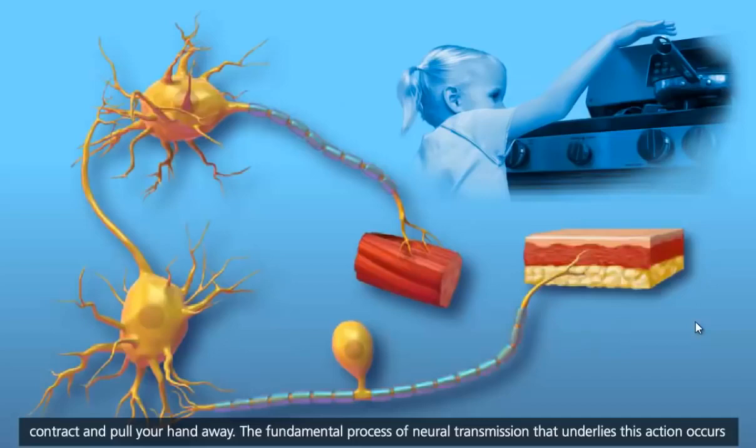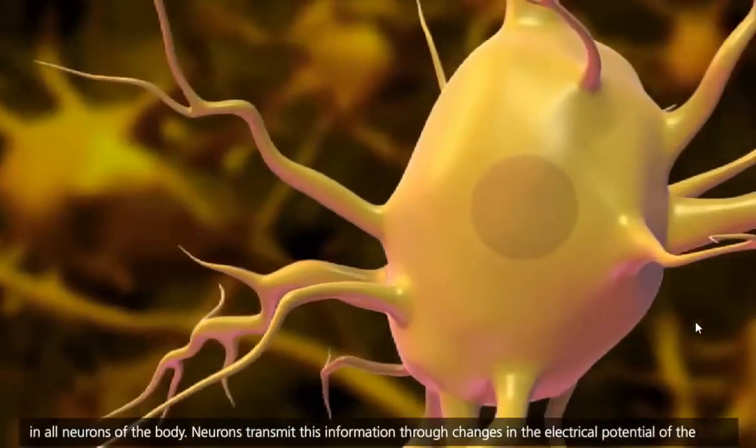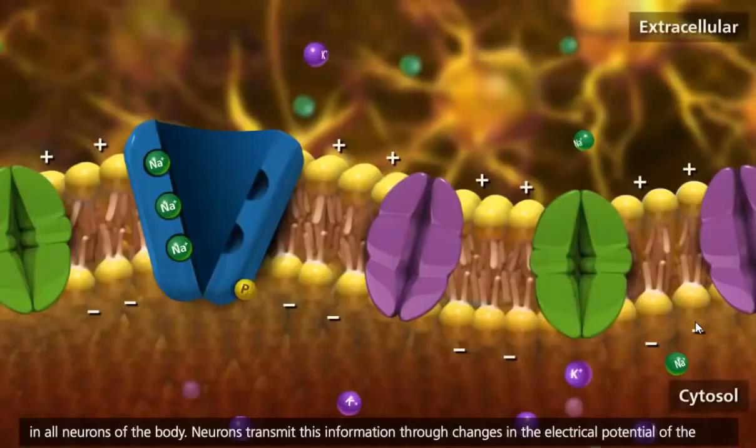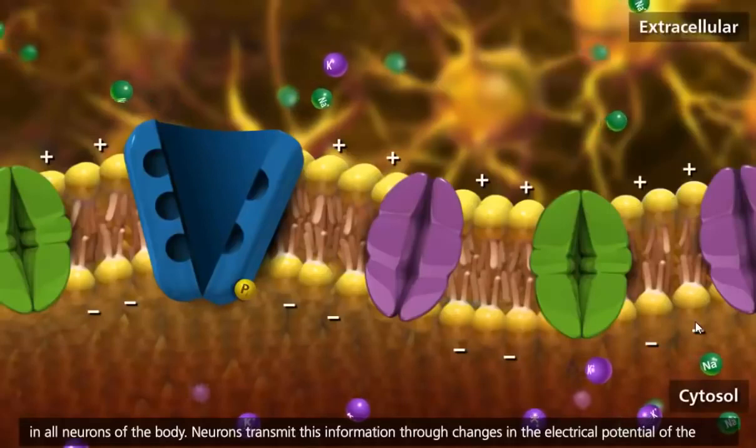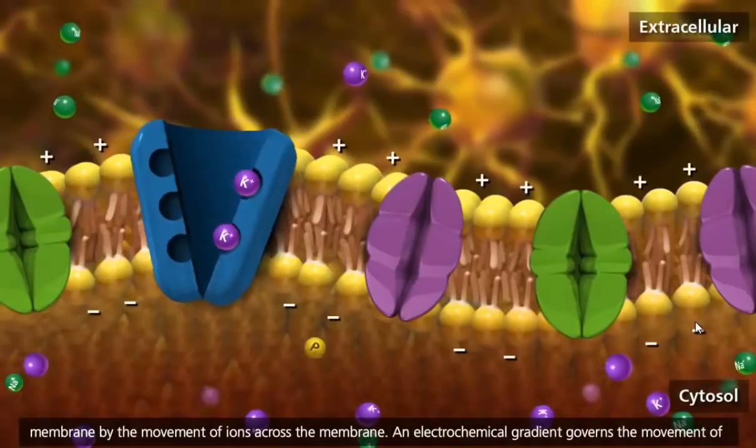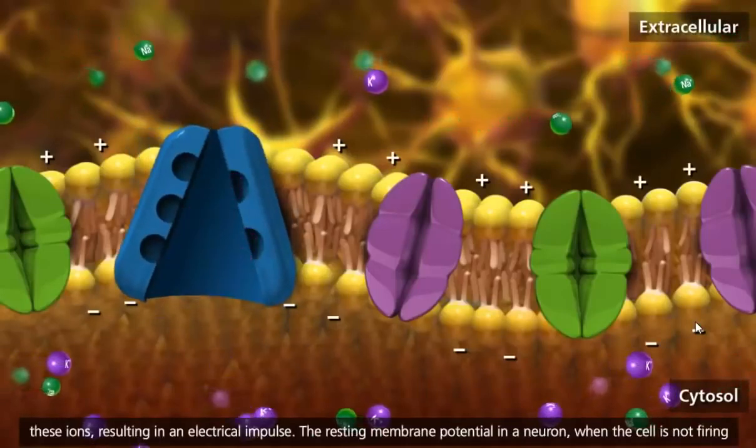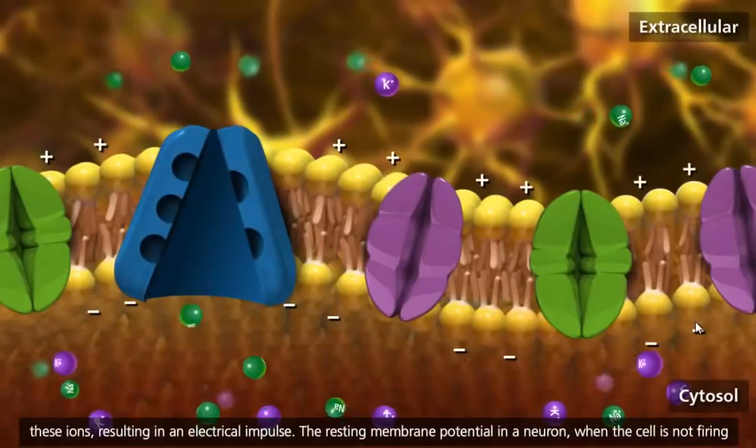The fundamental process of neural transmission that underlies this action occurs in all neurons of the body. Neurons transmit this information through changes in the electrical potential of the membrane by the movement of ions across the membrane. An electrochemical gradient governs the movement of these ions, resulting in an electrical impulse.